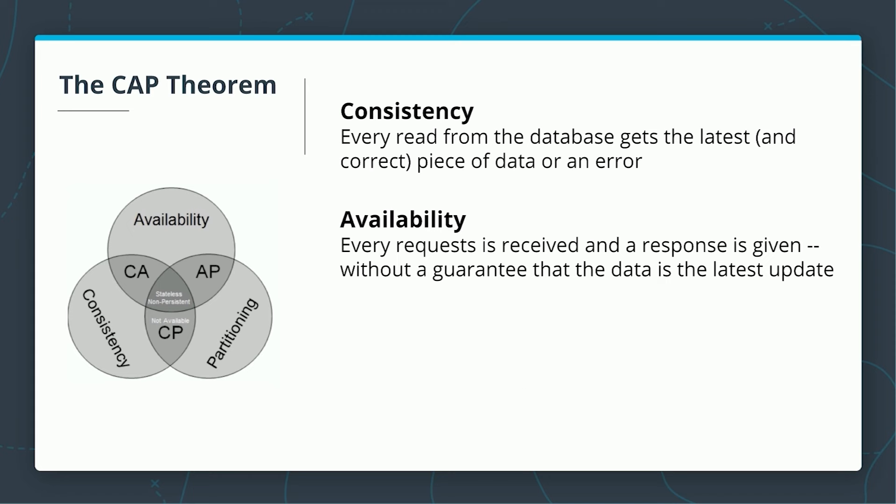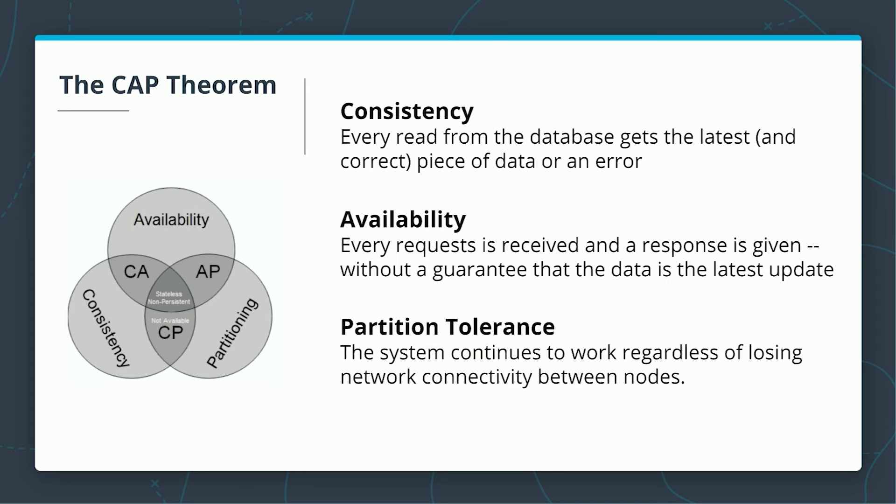Partition tolerance: the system continues to work regardless of losing network connectivity between nodes. When your system is running fine with no network failures, you can have both availability and consistency. But when the system has network failures, you may only have consistency or availability.